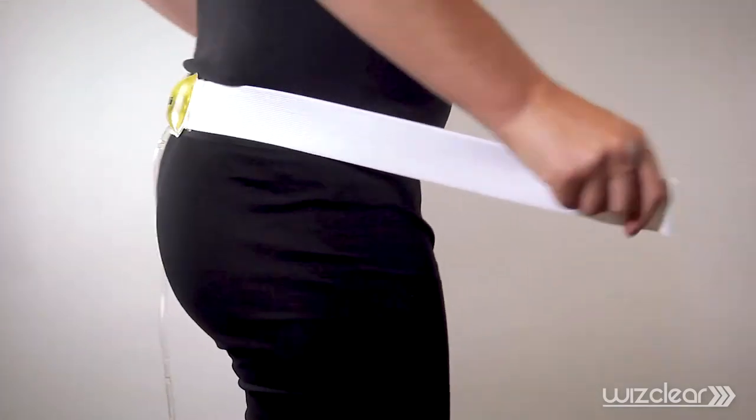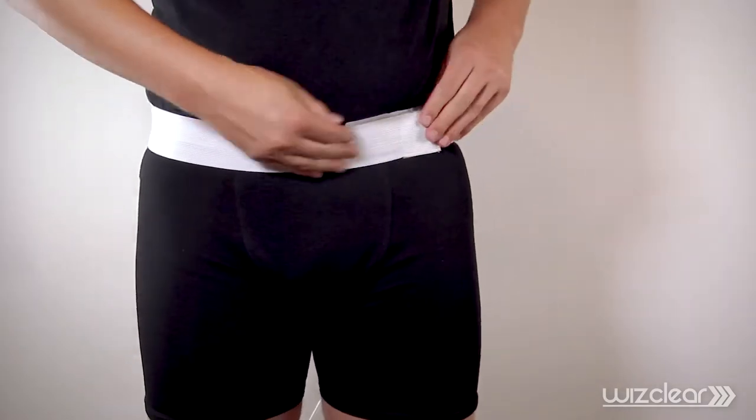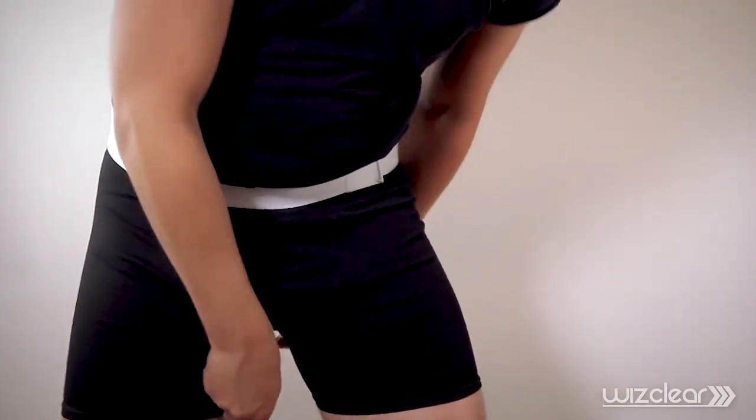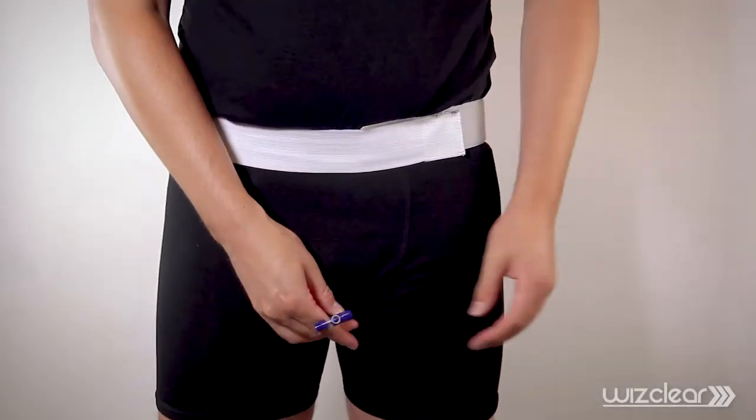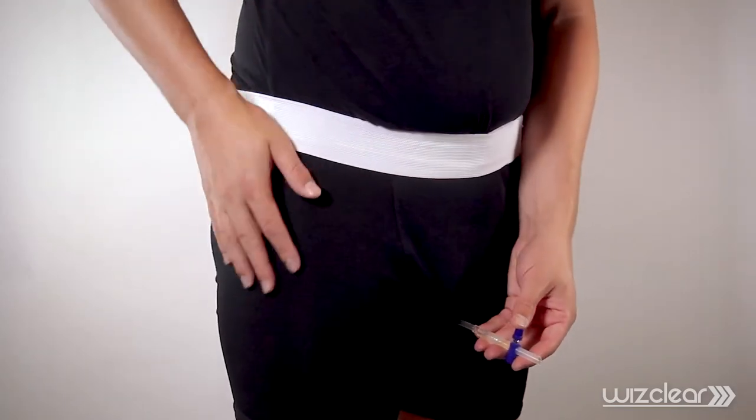The WizClear straps above your hips with the urine bag resting against your back. The clear plastic tube should extend down your back and through your legs. The silent valve and tube fits between your legs, making it perfect for simulated urination. From a front view, the WizClear should not be visible.